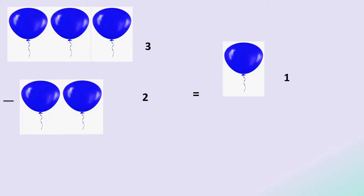Let's try to learn how to do subtraction using objects. Here the object is balloon. In this picture there are three balloons — one, two, three. In the second picture there are two balloons — one, two — and this is the minus sign. It means out of three balloons, how many balloons do I have to take out? Two balloons. So let's cut these two balloons — one and two. So I am left with how many balloons now? One balloon. So I am left with one balloon and my answer will be one.